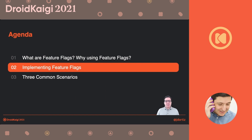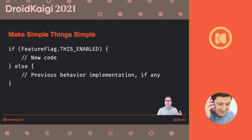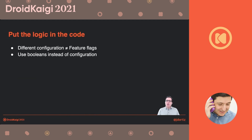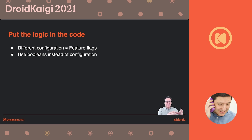Let's talk about implementation. What you are going to do is have some boolean variable that you will use to enable the new code and disable it when that feature flag is true. That means that when the feature flag is disabled, I will be running the old code — if there was a previous implementation — while when it is enabled, I will be running the new one. The idea is that you don't use different configuration values as feature flags. Don't use the server that you are connecting to as a feature flag. Instead, use booleans, which is much easier to understand and doesn't clutter your code.